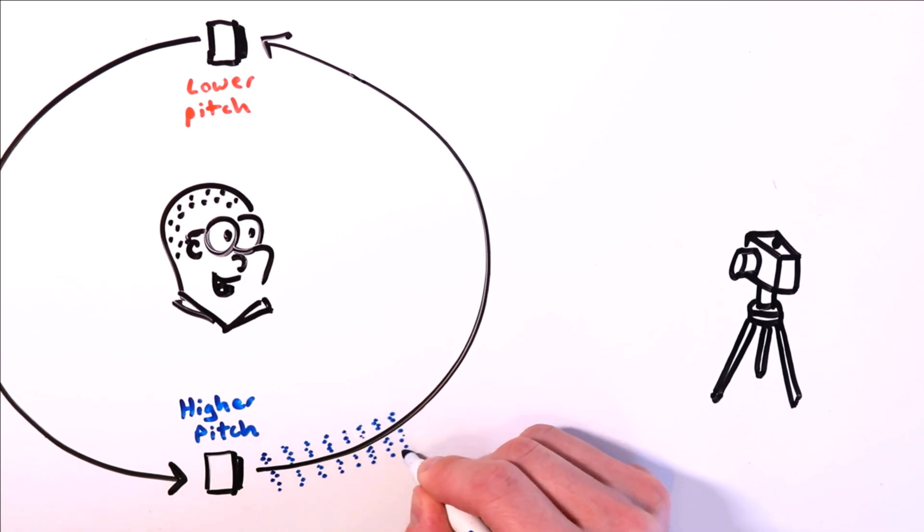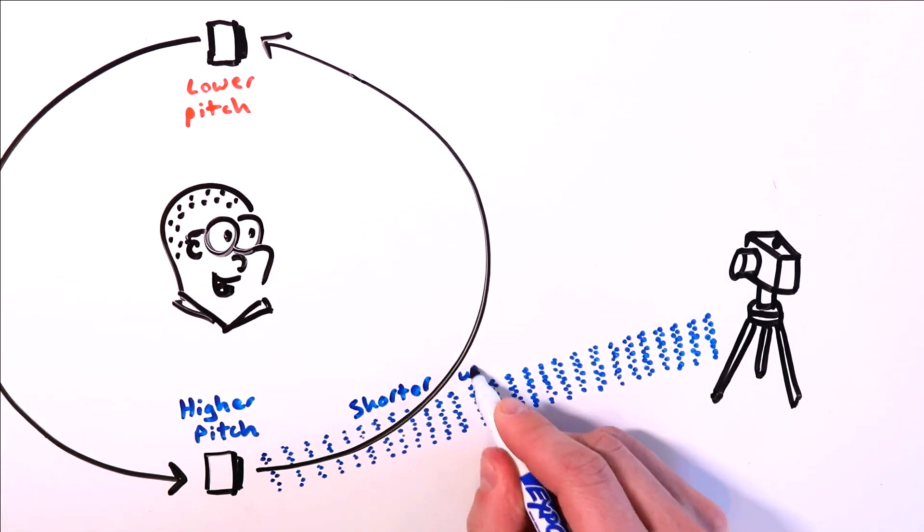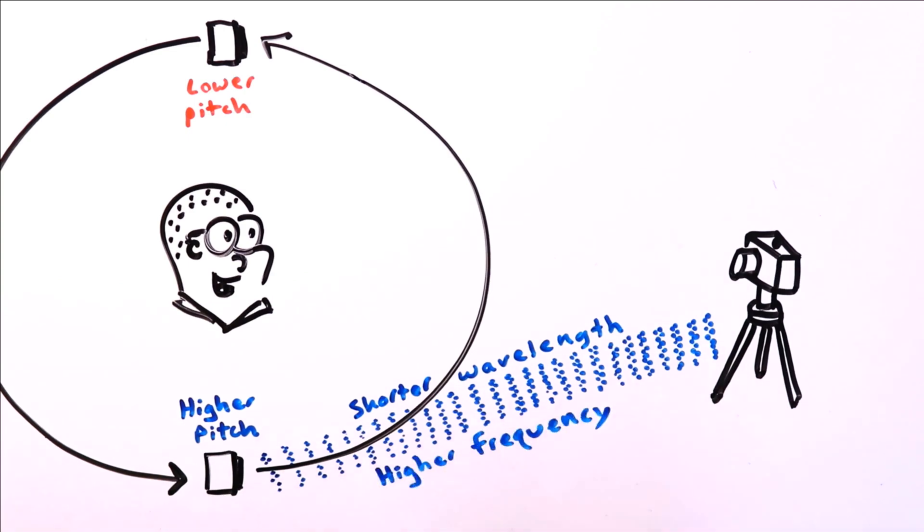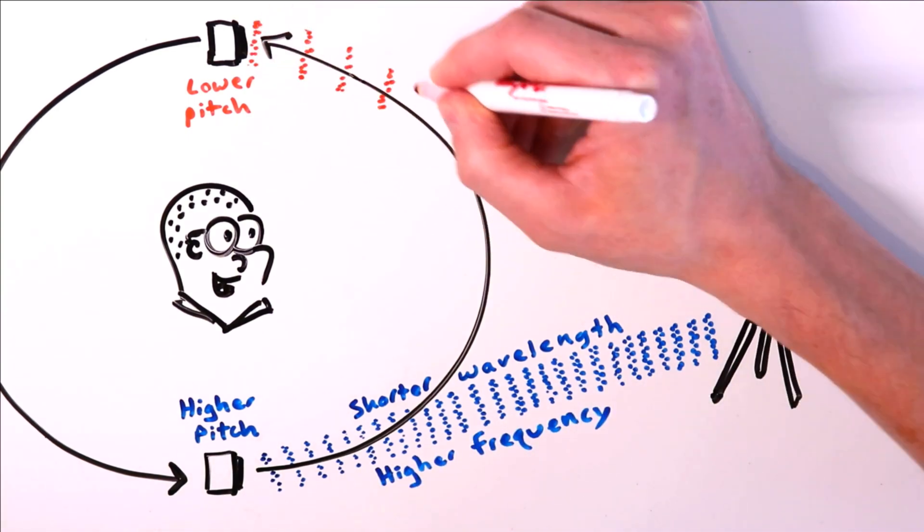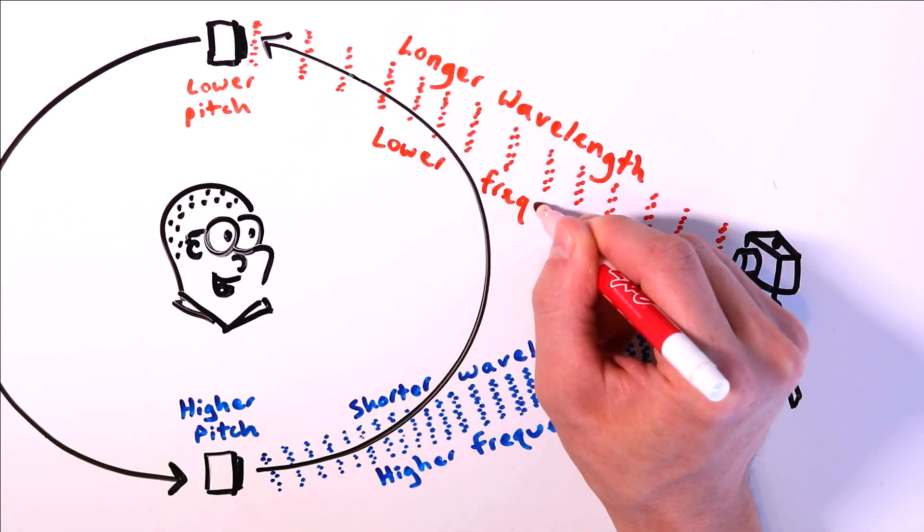So this is the reason we observed a higher pitch when the speaker was swinging toward you, the observer. The wavelength decreased, resulting in a higher frequency. This is also why we heard a lower pitch as the speaker swung away. The wavelength increased, resulting in a lower frequency.